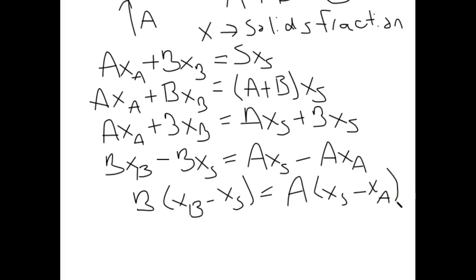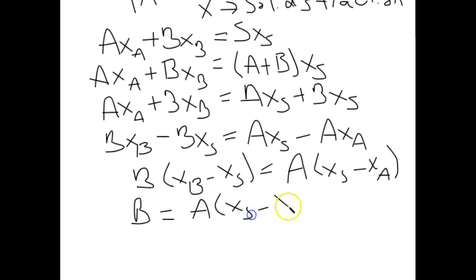Our final step is to pull that XB minus XS term over to the right side. Now B will be all by itself and we can go ahead and solve for it. And there's B.